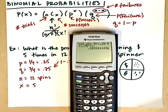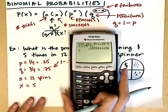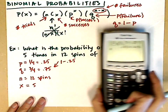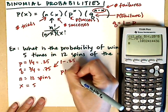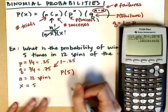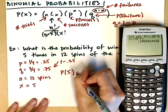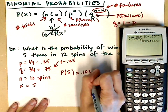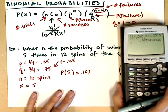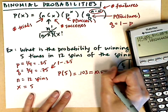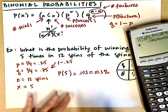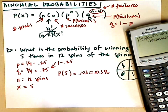I hit Enter and find that the probability is 0.103 — about 10%. So the probability of five successes is equal to 0.103, or approximately 10.3%.